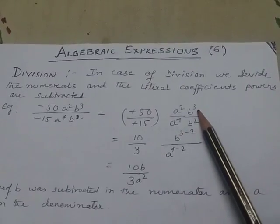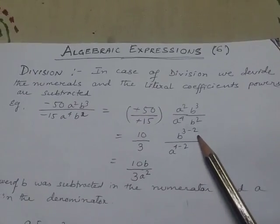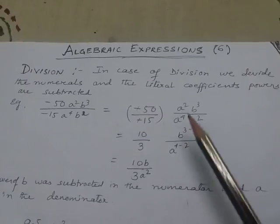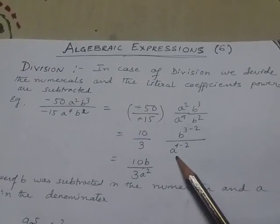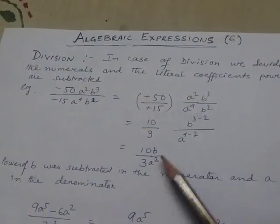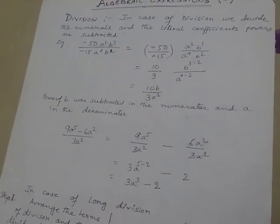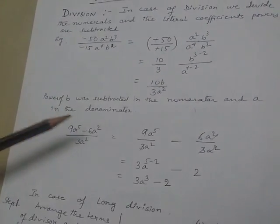Highest power of b is in the numerator, so I will subtract b³ minus b². Highest power of a is in the denominator, so I will subtract a⁴ minus a². So I am getting 10b/3a². Power of b was subtracted in the numerator and a in the denominator.